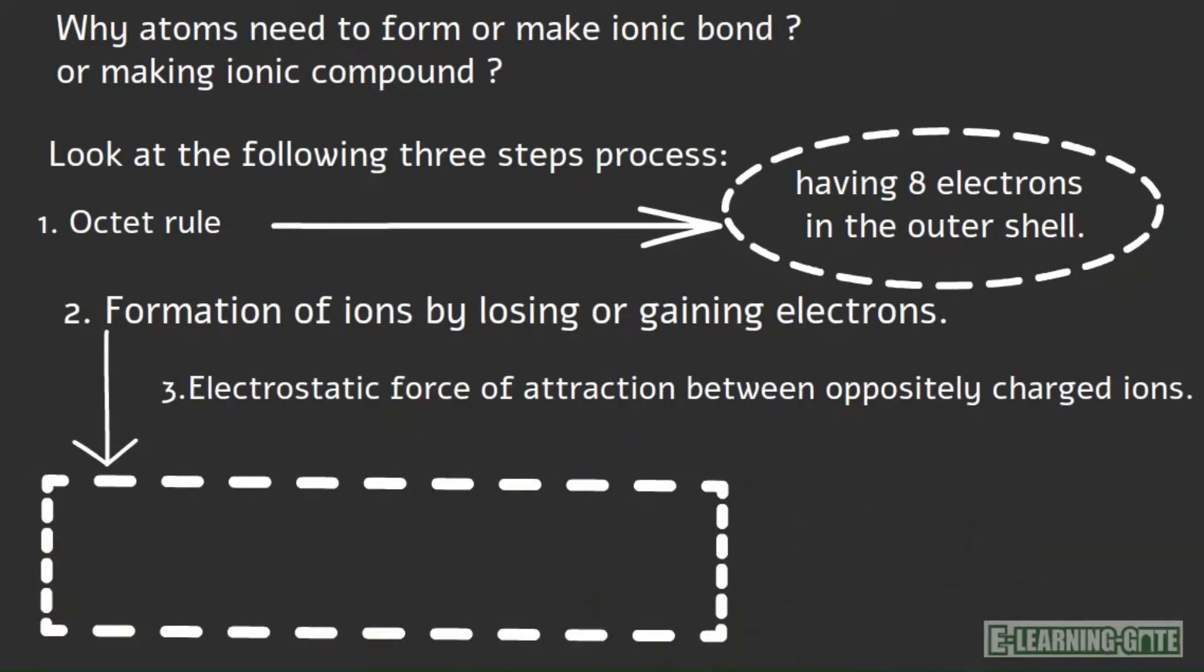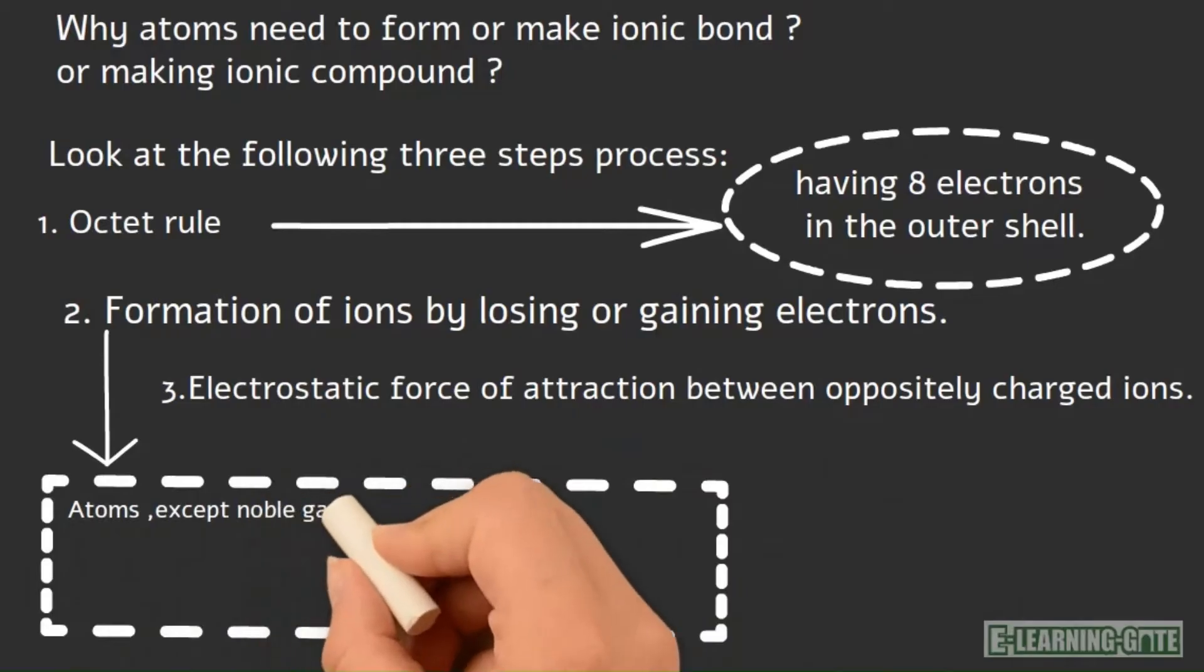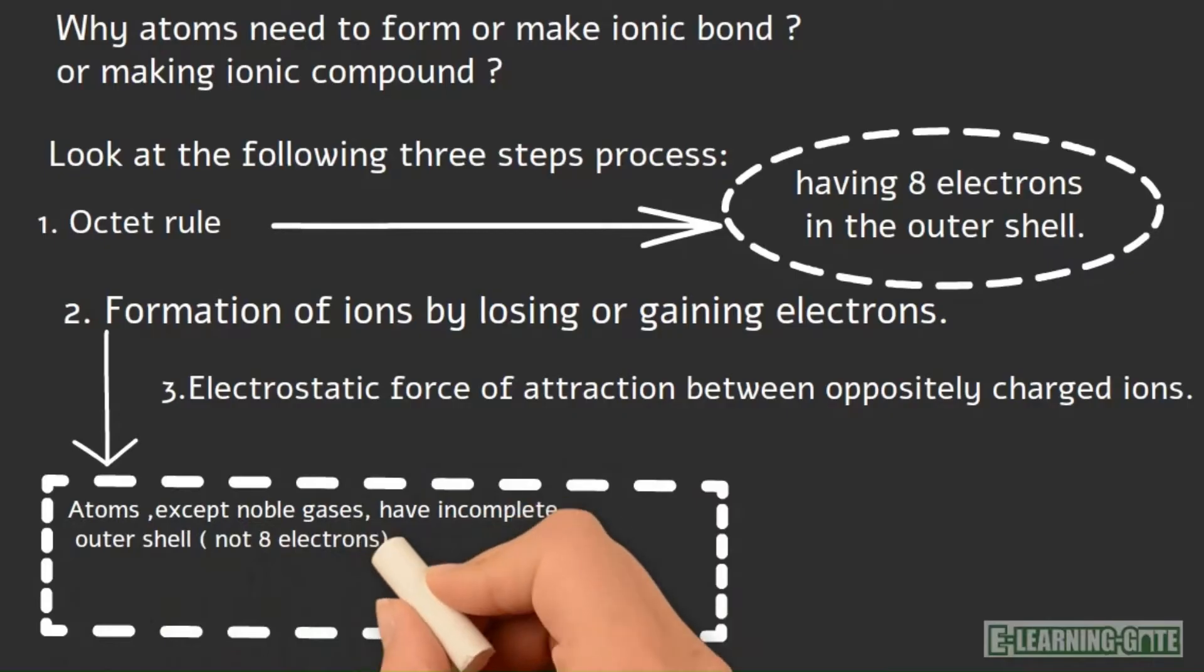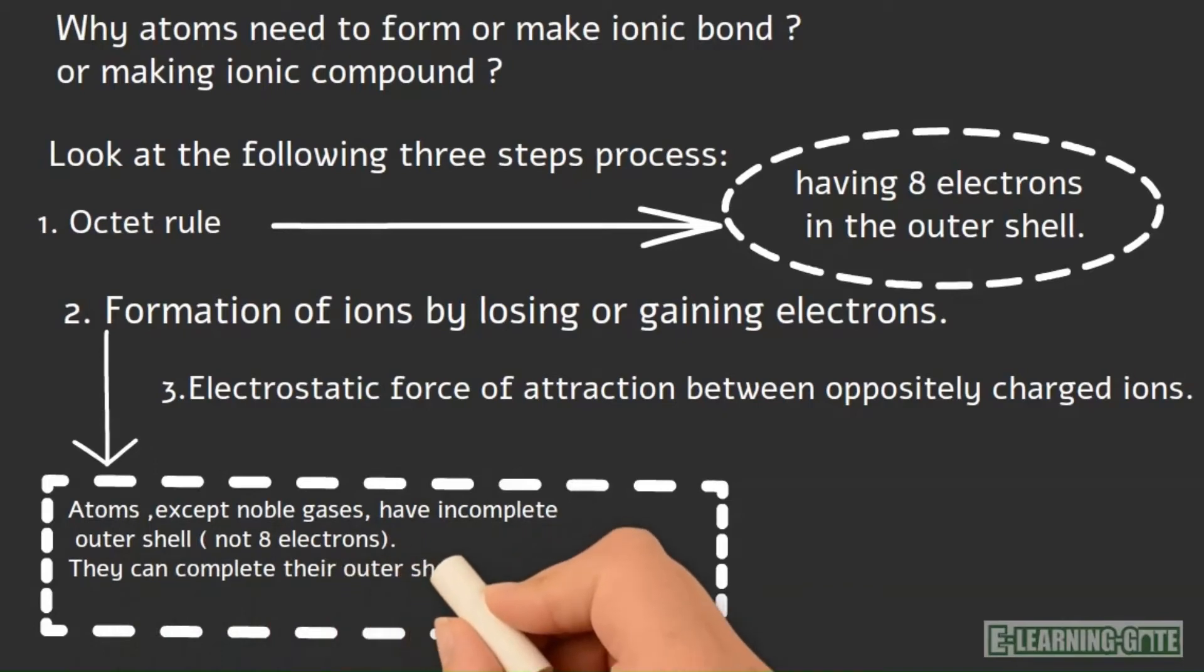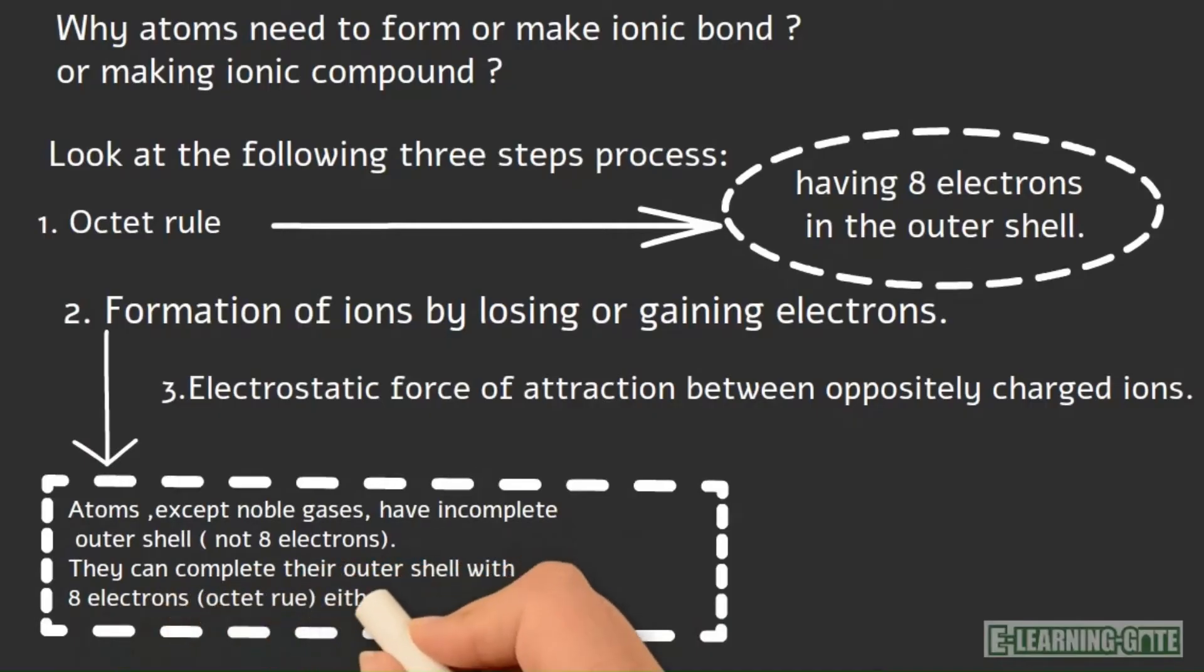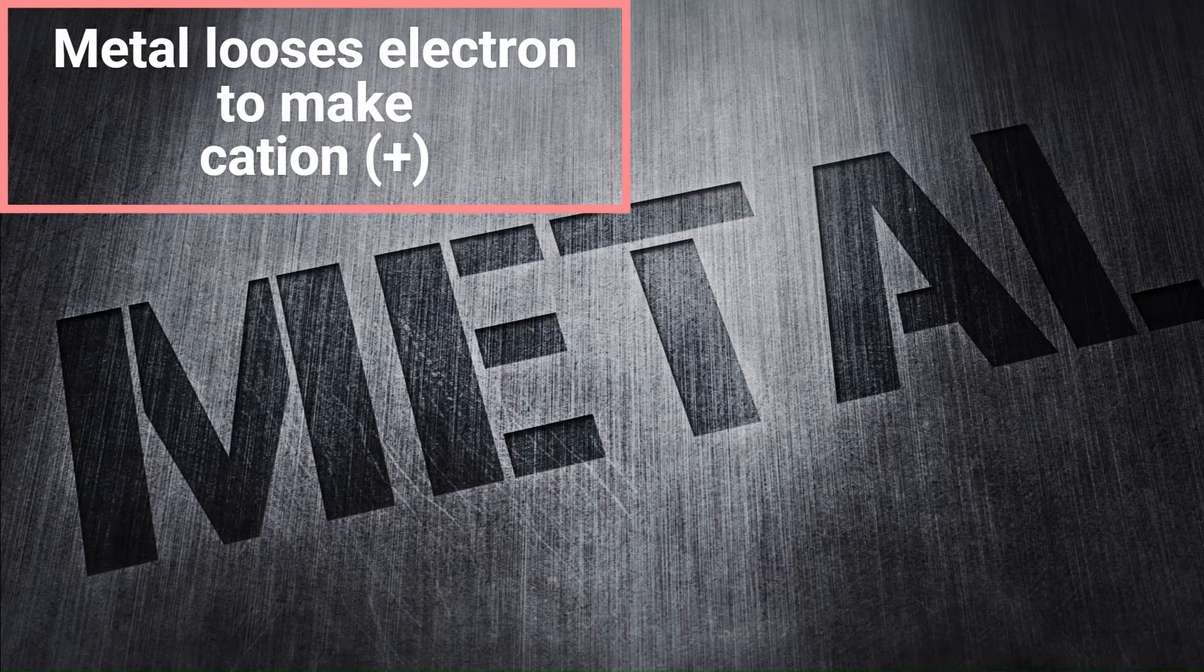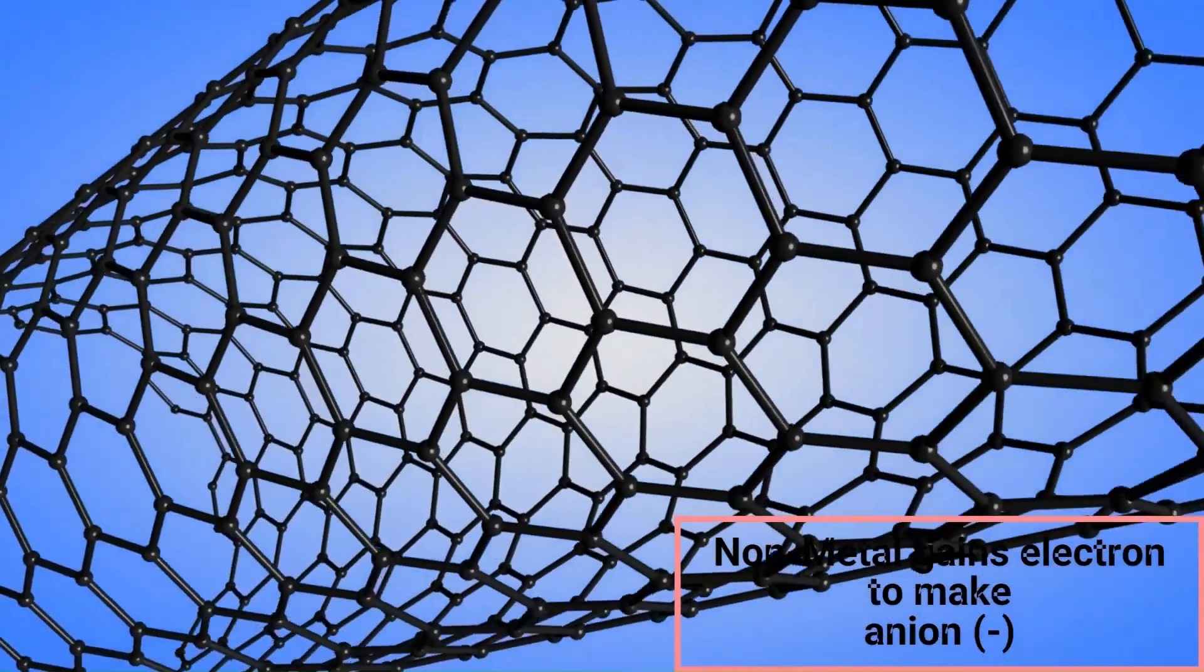Octet means 8. Elements can complete their octet either by gaining or losing electron. In other words, they change into cations and anions. Metals always lose electron to change into cation, while nonmetals always gain electron to become anion.